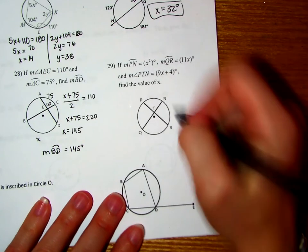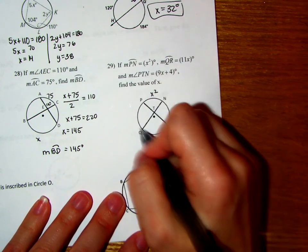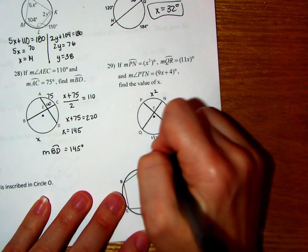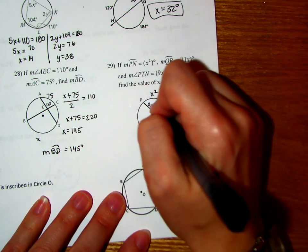On number 29, we're told that PN here is X squared, we're told that QR here is 11X, and we're told that angle PTN is going to be this 9X plus 4.